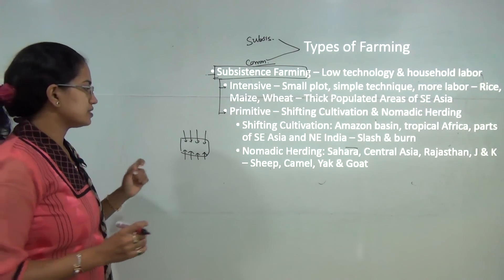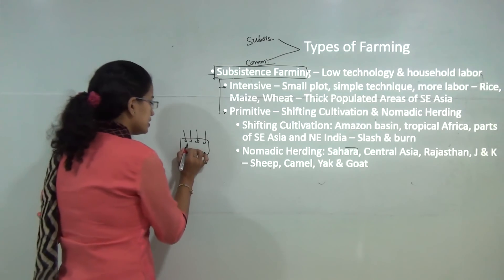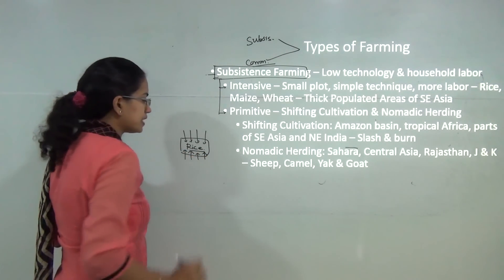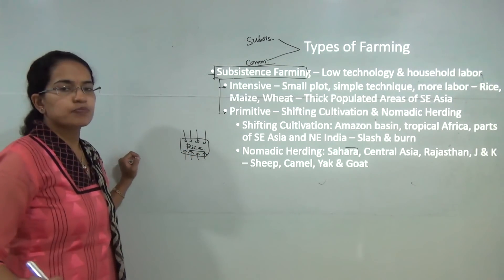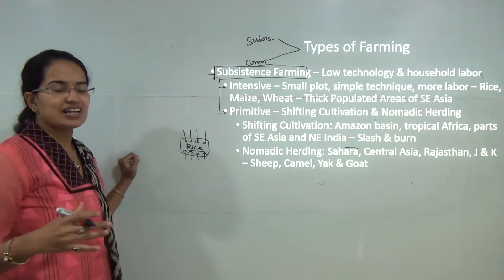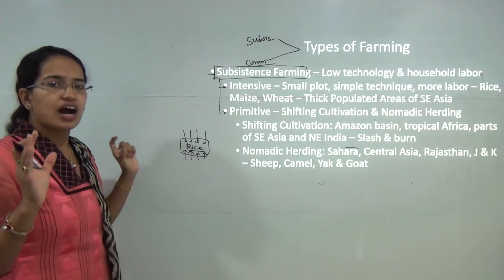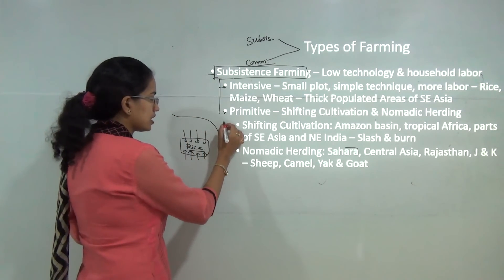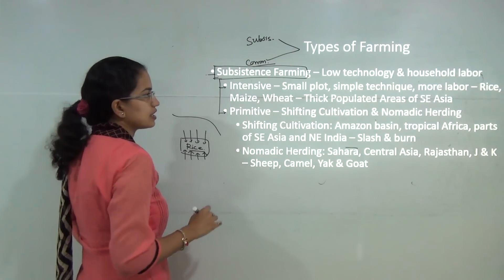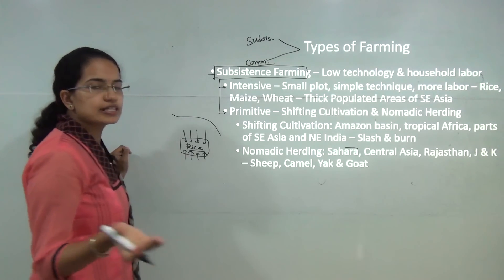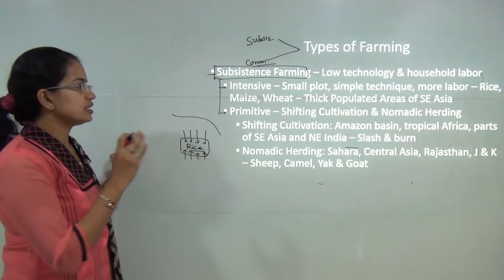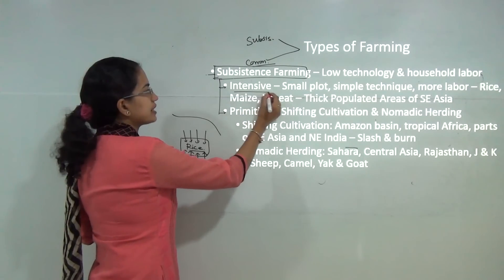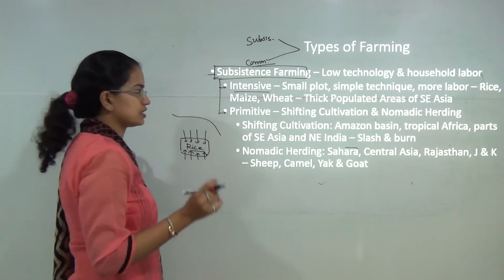Common examples of intensive subsistence farming include rice, wheat, and maize cultivation, specifically in highly populated areas such as the Ganga-Brahmaputra region in India and Southeast Asia.